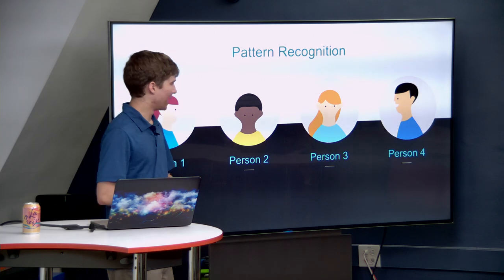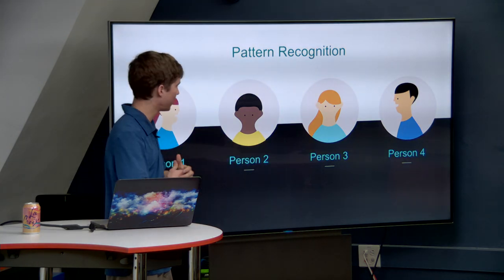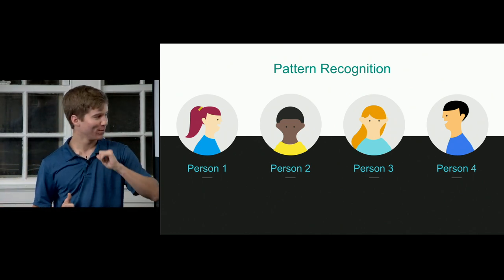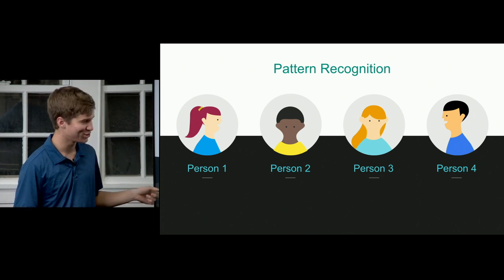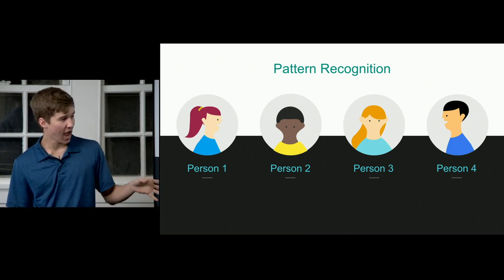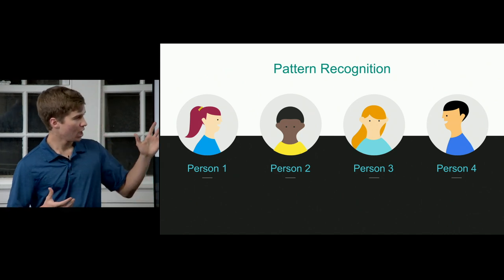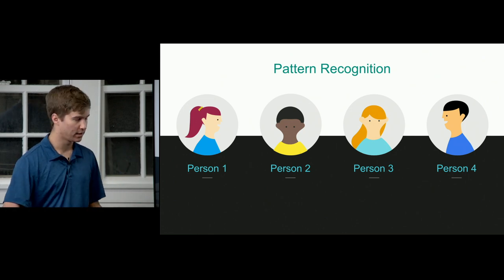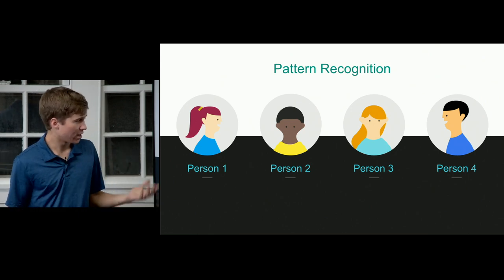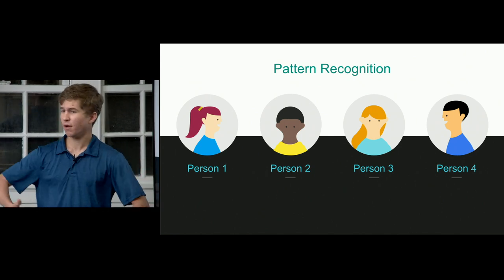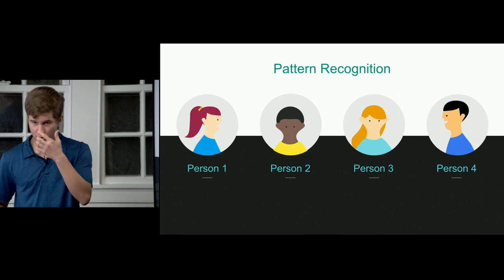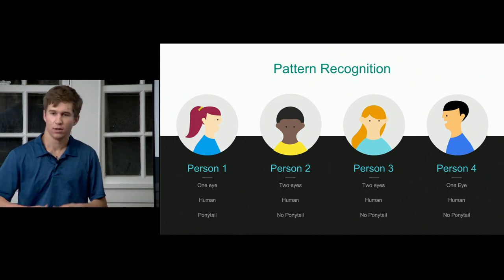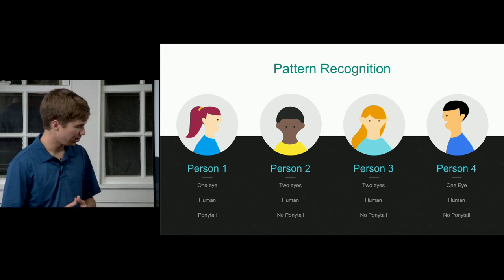Here's a real-world example to ease us into the idea of pattern recognition — that's what we're after with machine learning. I have four stock images with descriptions, and I want you to think about what patterns you can find between these four people. As a human being, you can find a very large number of patterns almost instantly. But machines have a limited amount of data they can pick up, especially when we're working on the smaller software side.